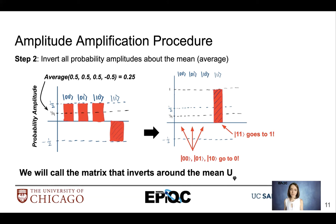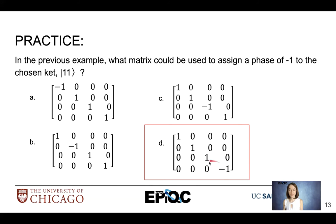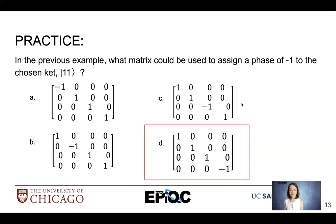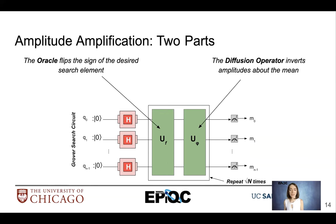We call the matrix that inverts around the mean U_φ. For a quick practice problem: in the previous example, what matrix could we use for the oracle that assigns a phase of negative 1 to the chosen ket? The answer is D. You can verify this by multiplying that matrix with different 2-qubit vectors. Amplitude amplification has two parts: the diffusion operation that inverts amplitudes around the mean, and the oracle that flips the sign of the desired search element, assigning that phase of negative 1.